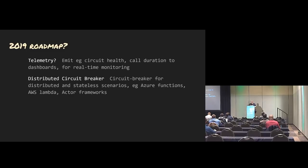Down the road this year, we're looking at telemetry — like emitting circuit health, call duration, real-time monitoring. Also a distributed circuit breaker, because serverless and actor models are inherently short-lived and can't maintain circuit statistics internally. They often exist in multiple instances, horizontally scaled, so they need to store and track circuit state externally. That's what the distributed circuit breaker is going to do.